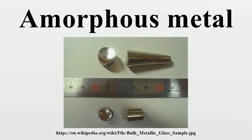An amorphous metal is a solid metallic material, usually an alloy, with a disordered atomic scale structure. Most metals are crystalline in their solid state, which means they have a highly ordered arrangement of atoms. Amorphous metals are non-crystalline and have a glass-like structure.